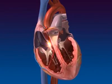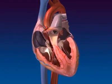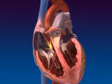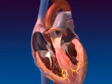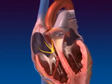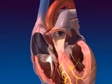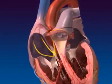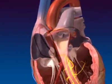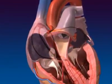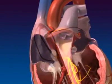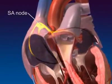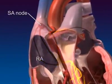Autorhythmic cells cyclically depolarize on their own, then fire an action potential each time they reach threshold — a process known as pacemaker activity. This activity originates from primary pacemaker cells in the sinoatrial or SA node in the upper right atrial wall.